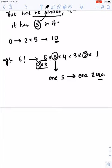The number of 5s will give us number of 0s, irrespective of 2s.